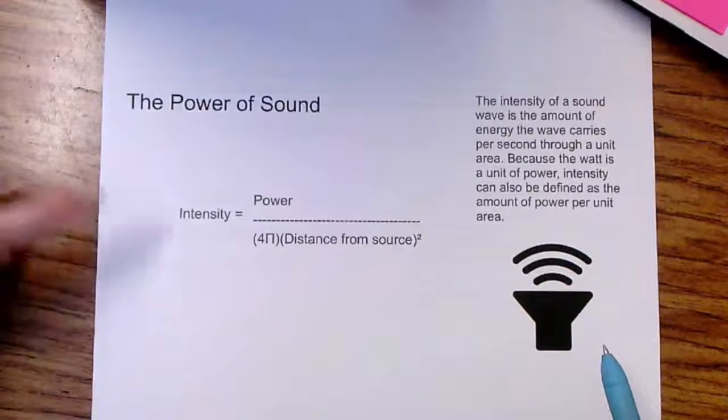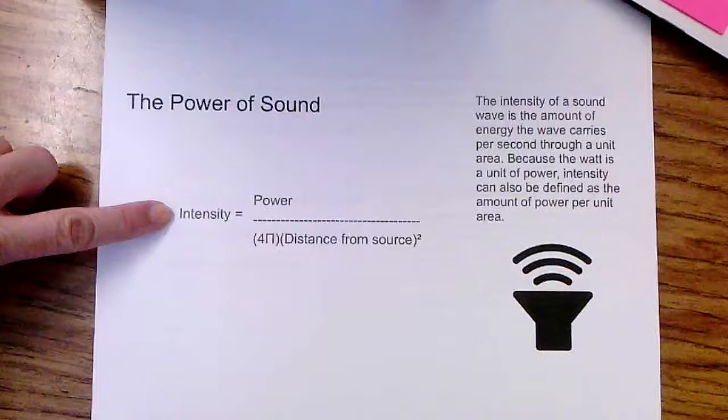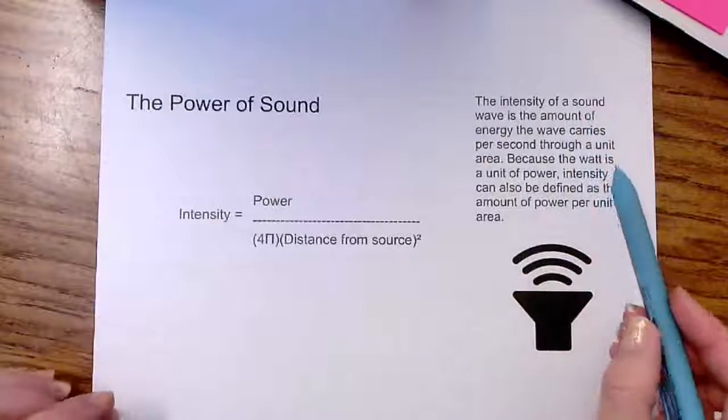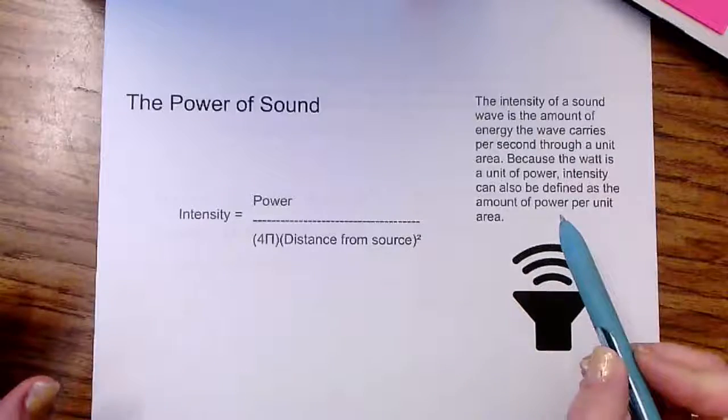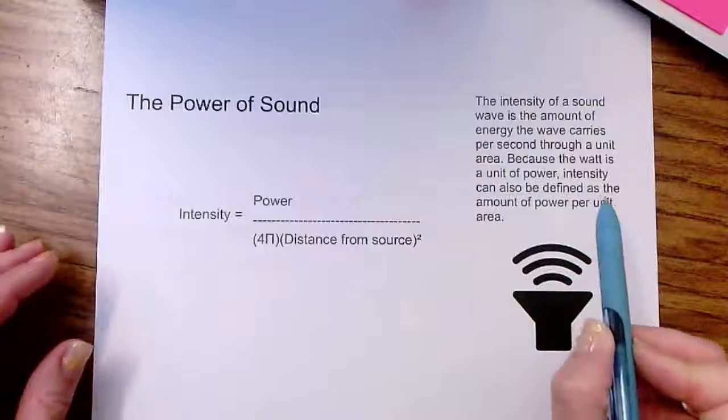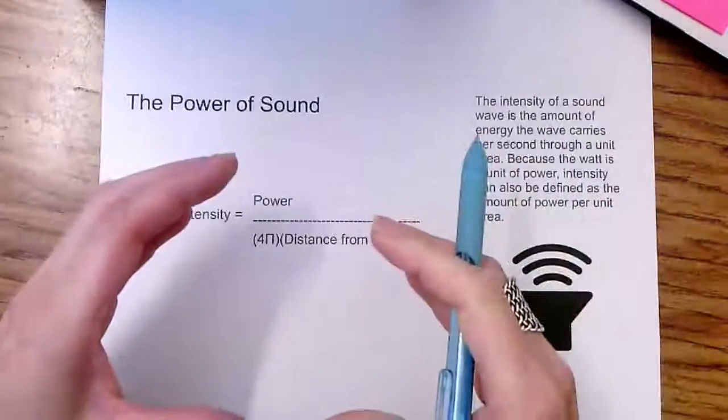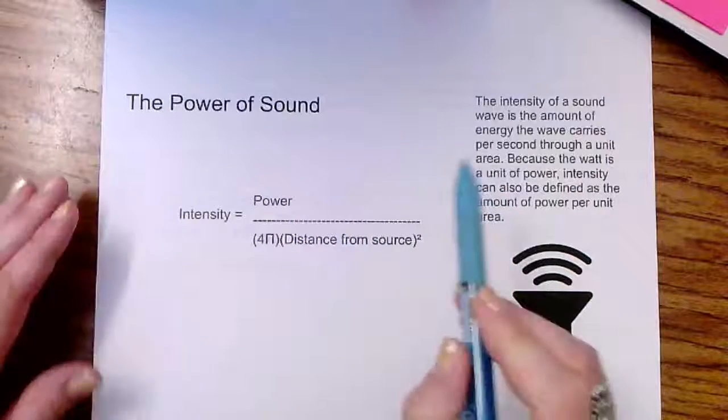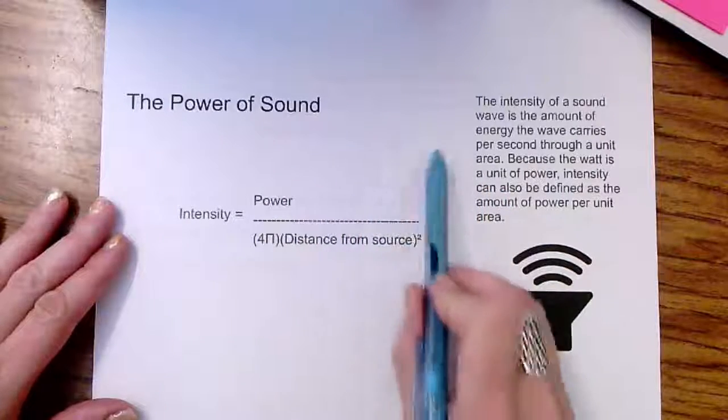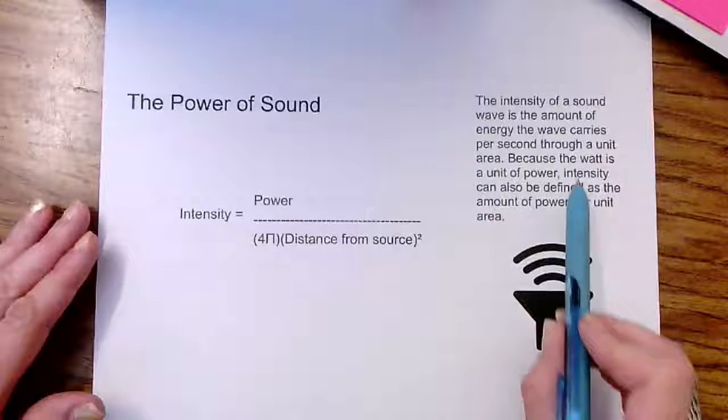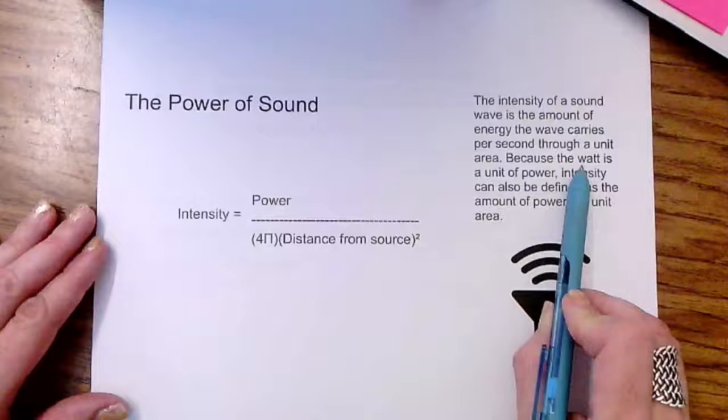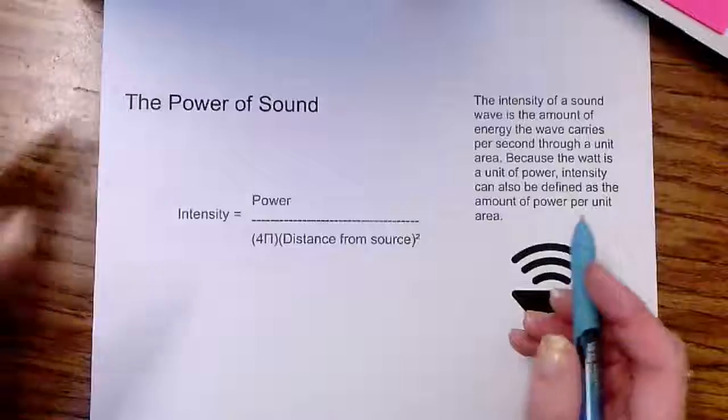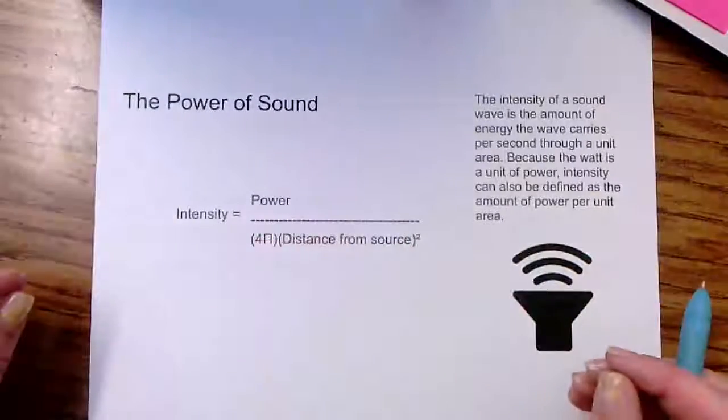We'll go over some of those as they pertain to calculating intensity of sound in this video. The intensity of a sound wave is the amount of energy the wave carries per second through a unit area. When we say unit area, it's like saying a measurement of length, like meter, and it is multiplied by itself to calculate the area inside that space. Watt is the unit of power that we would measure the sound in, and so we can take intensity and define it as the amount of power that we put inside that squared space.